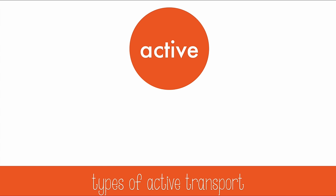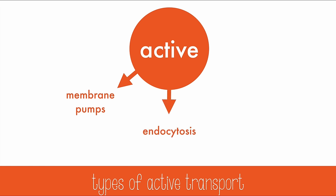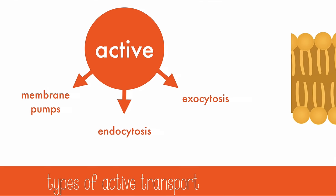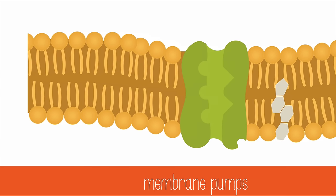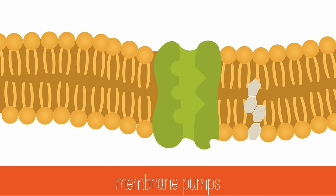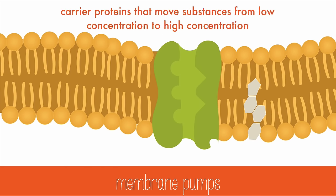There are three types of active transport: membrane pumps, endocytosis, and exocytosis. Let's look at membrane pumps first. Membrane pumps are carrier proteins that move substances from areas of low concentration to areas of high concentration. Let's look at the sodium-potassium pump to see how it works.